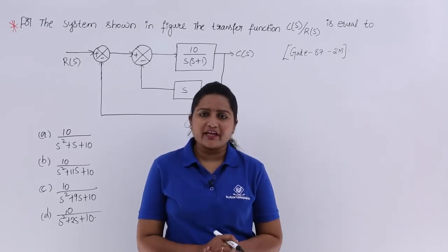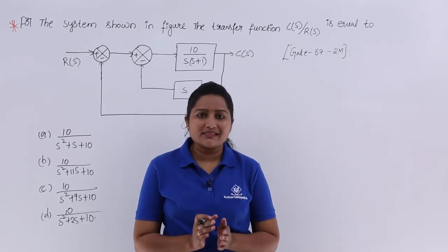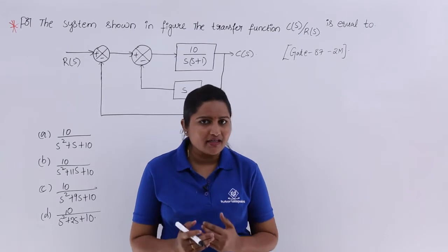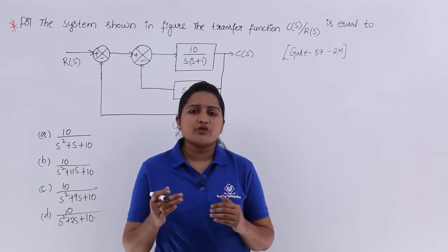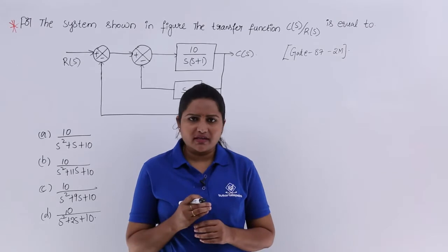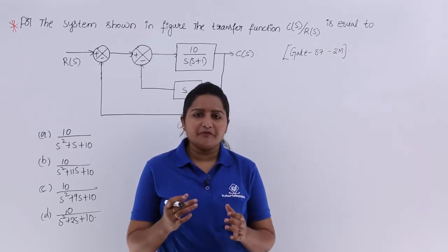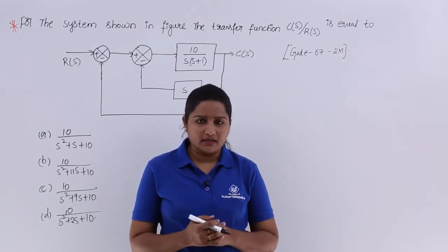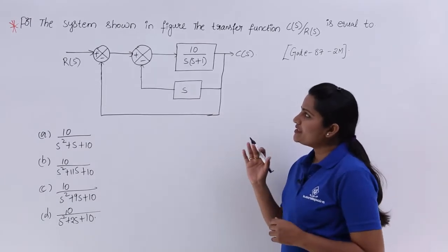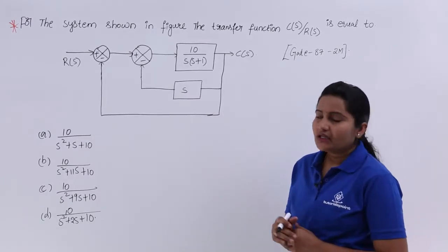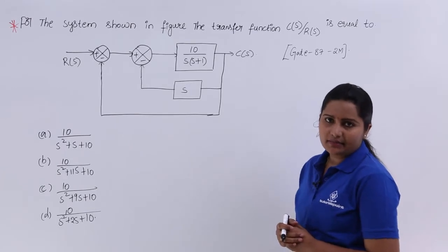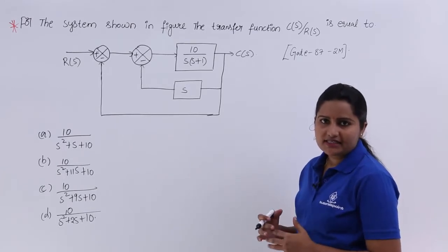In this video we are going to discuss a previous GATE problem which was given in 1987 for 2 marks, related to block diagram reduction, which is very simple if you know about feedback in control systems. We need to find the transfer function C(S) divided by R(S) for the system shown in the figure.